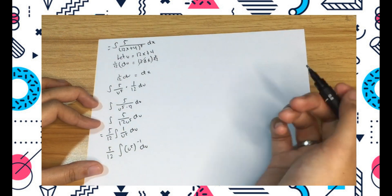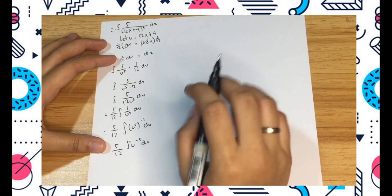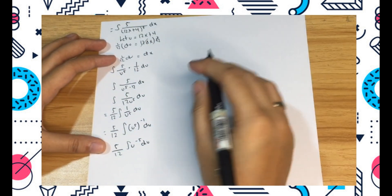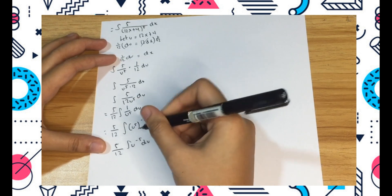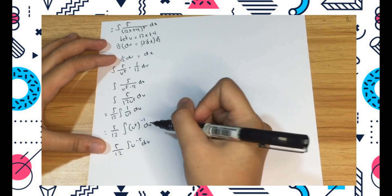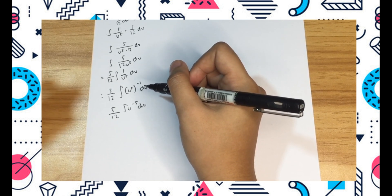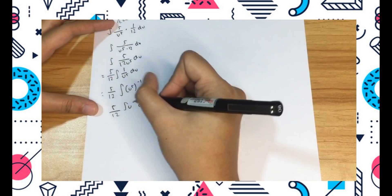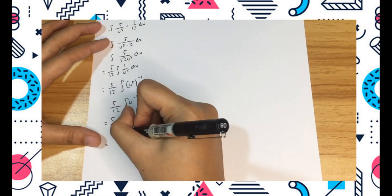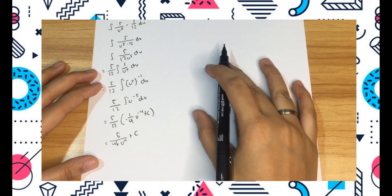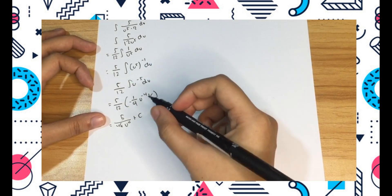Multiply the exponent, so it becomes negative. Apply the power rule. The integral of u negative 5 with respect to u is u to the negative 4 over negative 4. Substitute and simplify.